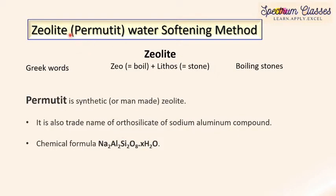Before discussing this water softening method, let's first discuss zeolite and permutit. Zeolite is composed of two different Greek words: 'geo' which comes from 'zeo' meaning 'to boil', and 'lite' which comes from 'lithos' meaning 'stone'. Combining these two words gives us 'boiling stones'. Zeolites are such types of stones that on heating give vapors like boiling water. That is why they are called boiling stones and are termed zeolites.